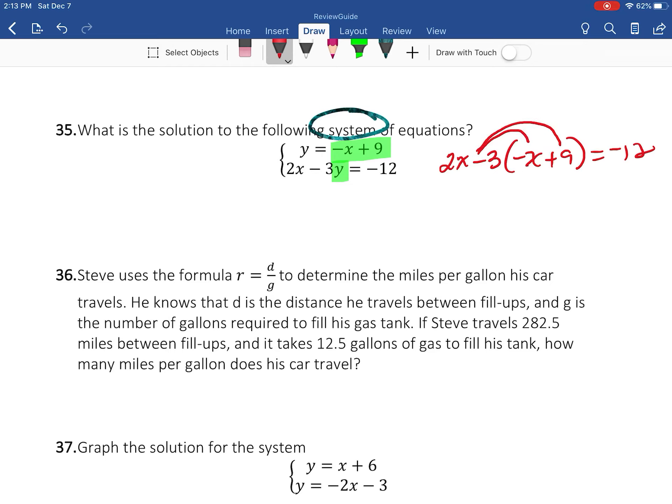Be careful when you're distributing, you have to distribute that negative. So this becomes -2x + 3x, and then that's going to become -27, and that's going to be equal to -12. Combine like terms, that becomes 5x - 27 = -12.